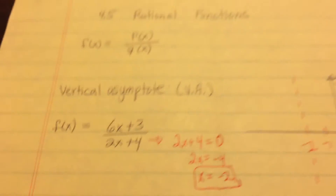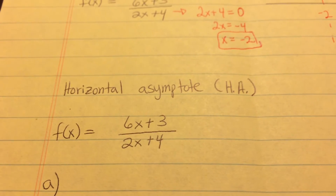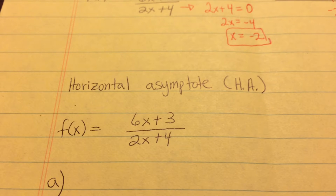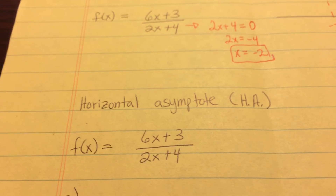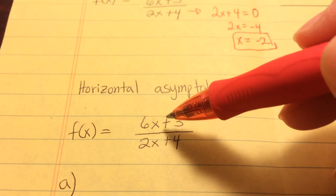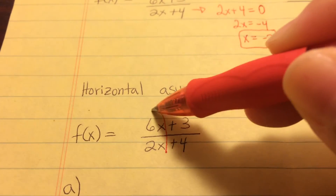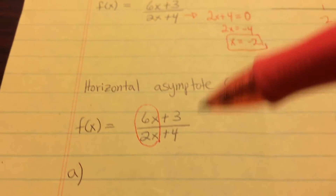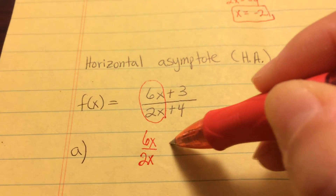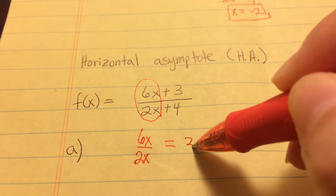So that's the vertical asymptote — found by taking the denominator and setting it equal to zero. The second type is the horizontal asymptote. There are two types of horizontal asymptote. The first type involves comparing the highest exponent in the numerator to the highest exponent in the denominator. For example, with 6x over 2x, the x's cancel and 6 divided by 2 gives 3.